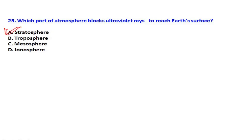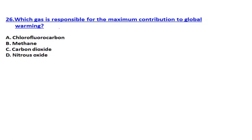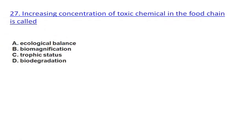The ozone layer present in the stratosphere absorbs and blocks harmful ultraviolet rays — please remember. Which gas is responsible for the maximum contribution to global warming? It is carbon dioxide. Increasing concentration of toxic chemicals in the food chain is called biomagnification — please remember.